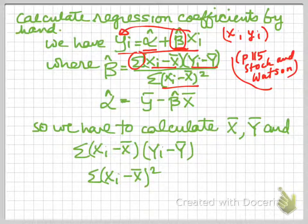And then for alpha hat, we have alpha hat equals y bar, that is the mean of y, minus beta hat that we've just calculated up here, times x bar, the mean of x. So we need to calculate the mean of x, the mean of y...